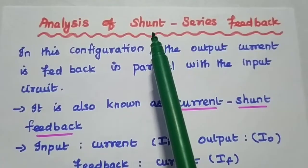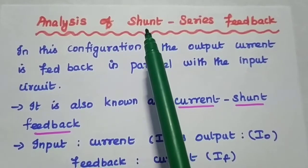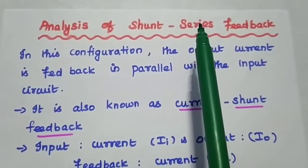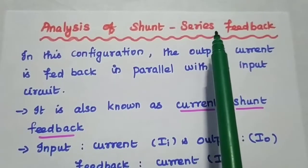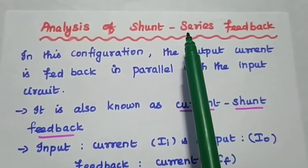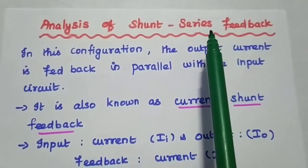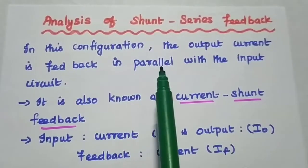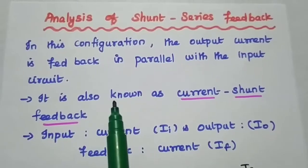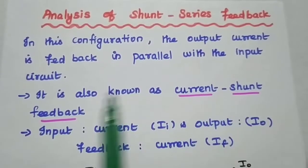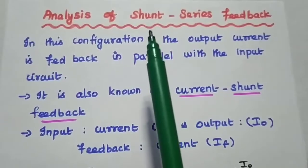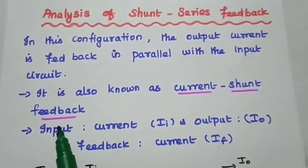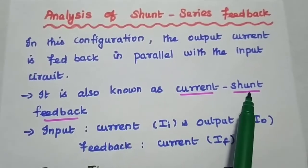For shunt mixing, the input is a current signal and feedback is also a current signal. The second term represents the way of sampling the output signal. For series sampling, the output is a current signal, so series sampling is also called current sampling. In this configuration, the output current is fed back in parallel with the input circuit. It is also known as current shunt feedback. Shunt series feedback is also known as current shunt feedback — that means current sampling, shunt mixing feedback.